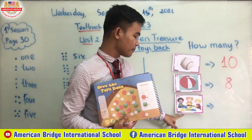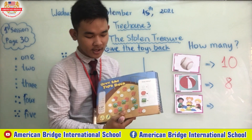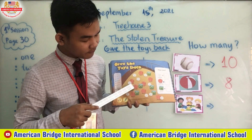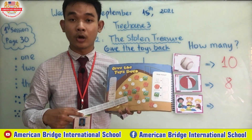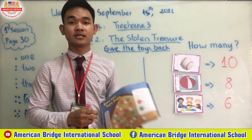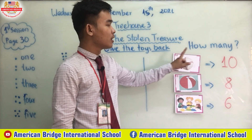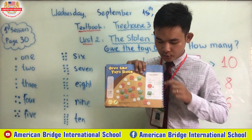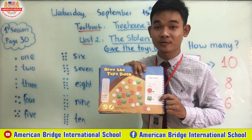One more question: how many puzzles do you see? Let's count — one, two, three, four, five, six. There are six puzzles. I can see six puzzles. So the answers are: number ten, number eight, and number six. Now it's your turn to write number ten, number eight, and number six in your book.